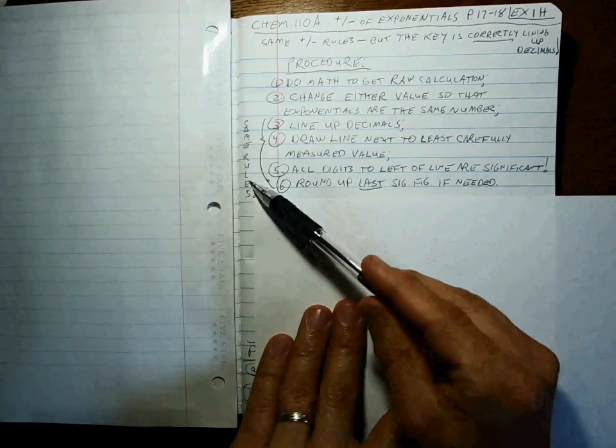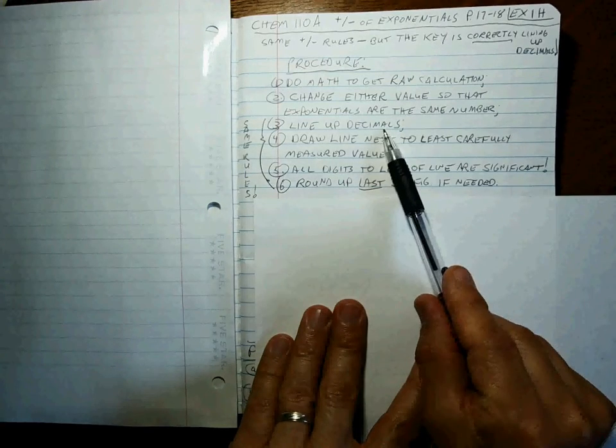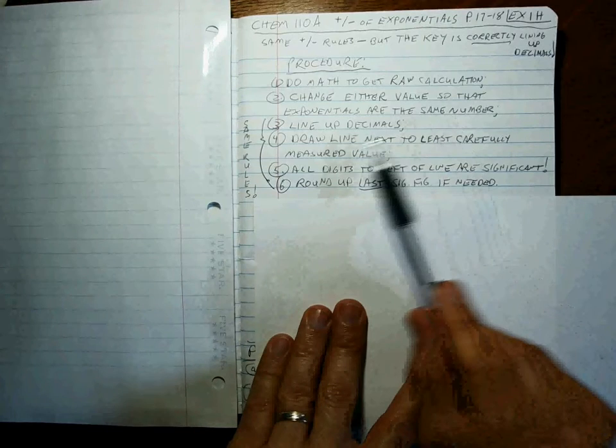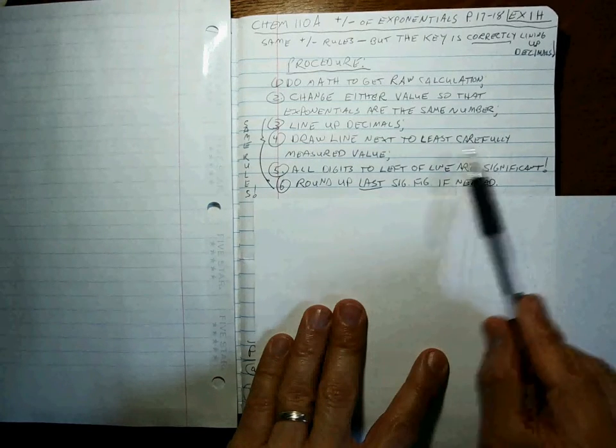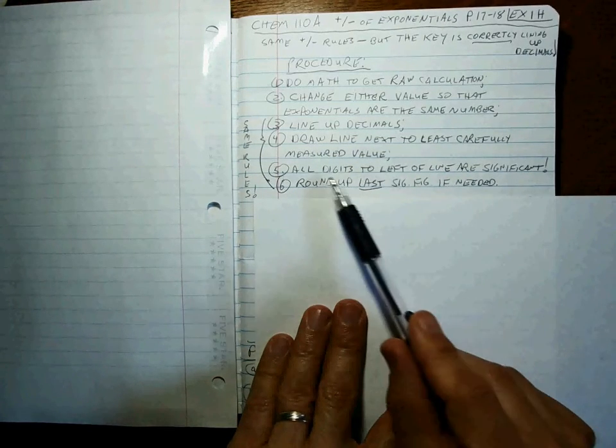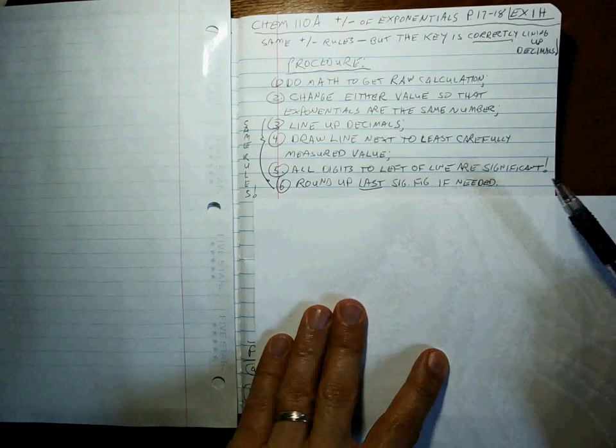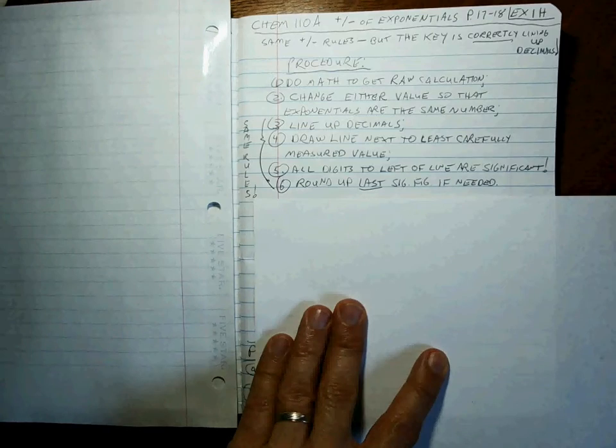Gave you the same value with the same sig figs. And that's the key. And then 3, 4, 5, and 6, the same rules as before. You line up the decimals after you do the exponentials match. You draw the line next to the least carefully measured value. All the digits to the left of the line are significant. All to the right aren't. And then you round up the last sig fig.